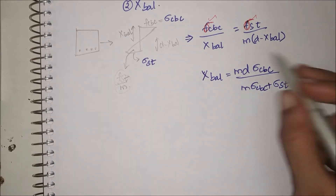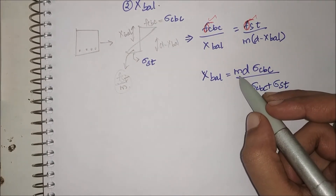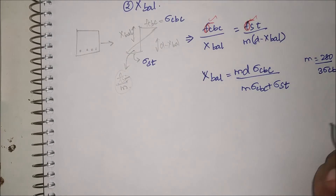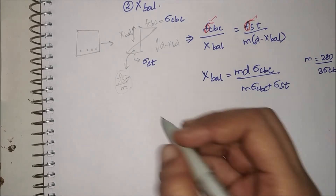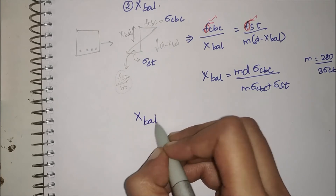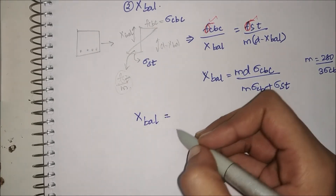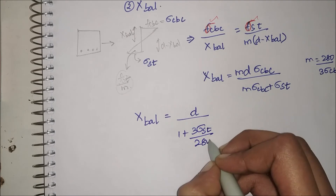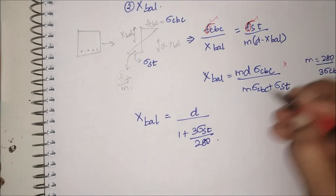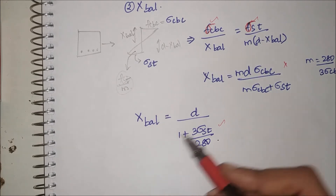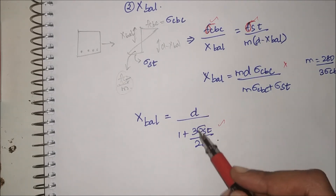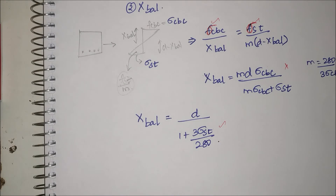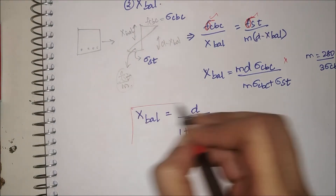Substituting m = 280 / (3·σ_cbc) and simplifying, the formula reduces to: x_balance = d / (1 + 3·σ_st / 280). Note that x_balance depends only on the depth d and σ_st — the permissible stress in steel — and not on σ_cbc. Always remember this. Since σ_st and d are known, x_balance is found.